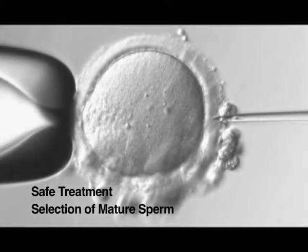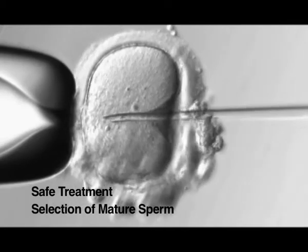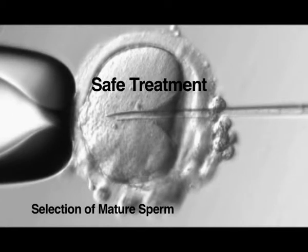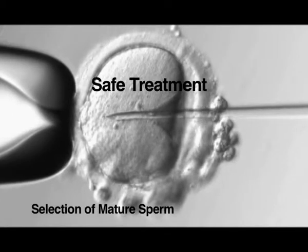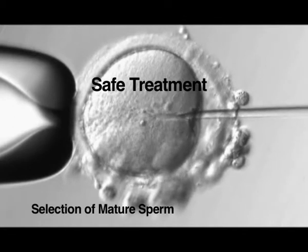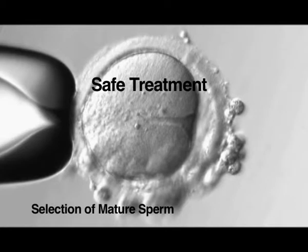Two main features distinguish SpermSlow from polyvinyl pyrolidone PVP. SpermSlow contains hyaluronan, which is a natural component of the oocyte cumulus complex and is completely biodegradable by the oocyte.